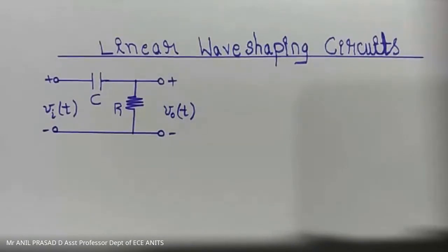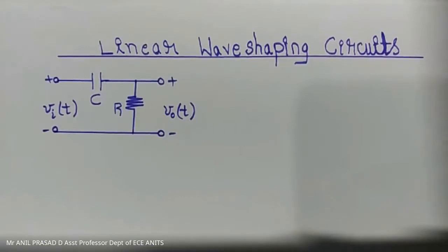In the first unit — linear wave shaping circuits — there are only two circuits: one is the RC low pass filter circuit and another is the RC high pass filter circuit. In either case, we will be using only four varieties of inputs: step input, pulse input, square wave input, and ramp input. Today we are going to start a new circuit — the RC high pass filter circuit.